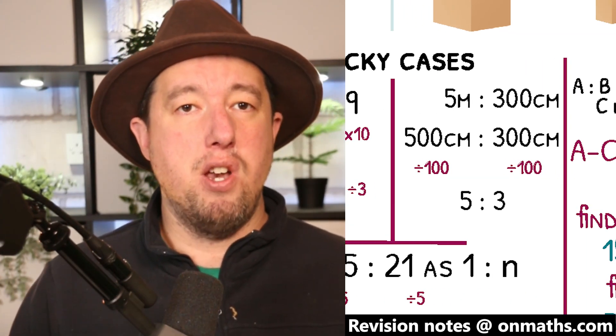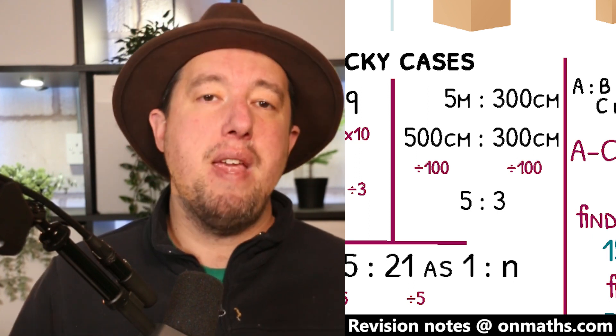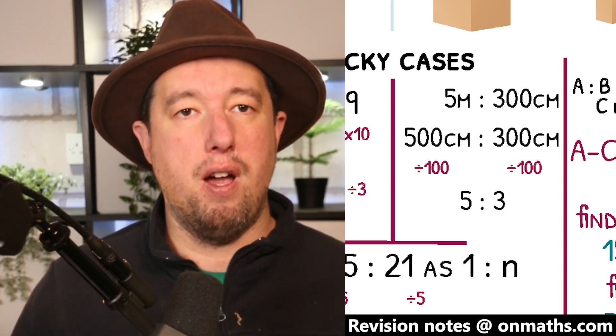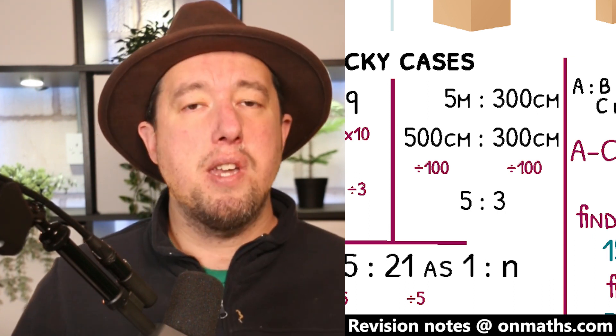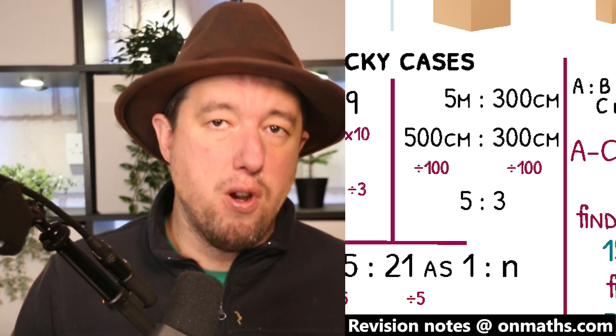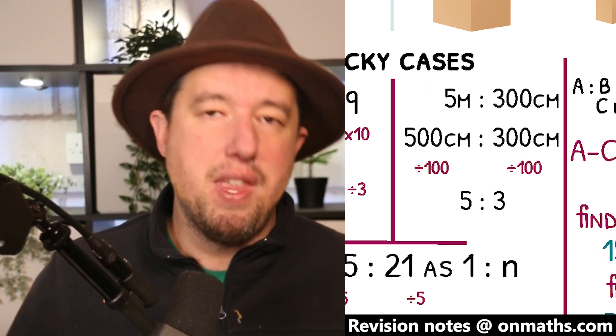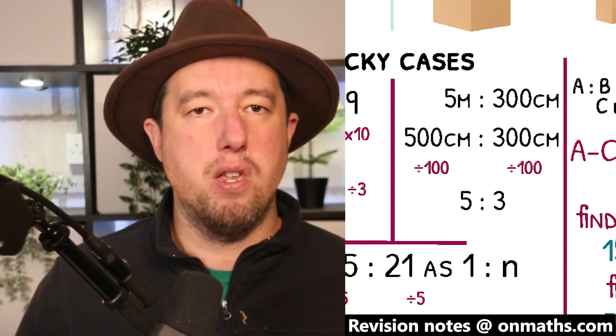If the two sides of the ratio are different units, convert them into the smaller unit before simplifying. To simplify 5 meters to 300 centimeters, we would start by converting it to 500 centimeters to 300 centimeters, then divide by 100 to get 5 to 3.